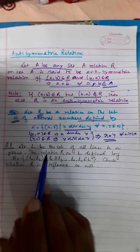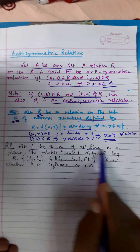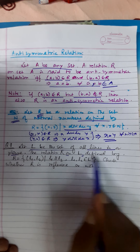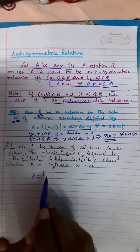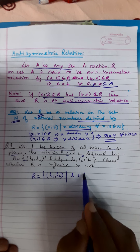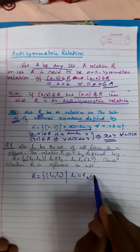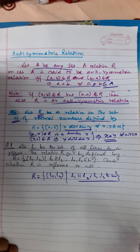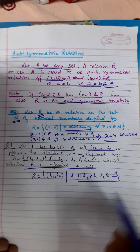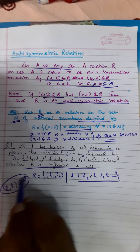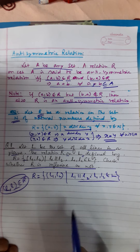Question number 1: Let L be the set of all lines in a plane. The relation R on L is defined by R = {(L1, L2) such that L1 is parallel to L2}, for L1 comma L2 belonging to L. Check whether R is reflexive or not. Reflexive means L comma L belongs to R — that we have to verify.